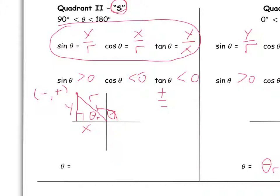What's the relationship between theta and the reference angle theta_R in quadrant 2? The terminal arm goes from the initial arm all the way to quadrant 2. Going all the way to the left is 180 degrees. So theta and theta_R together make 180 degrees. To get theta from theta_R, we take 180 degrees minus theta_R. For example, if theta_R is 30 degrees, then theta equals 180 minus 30, which is 150 degrees.